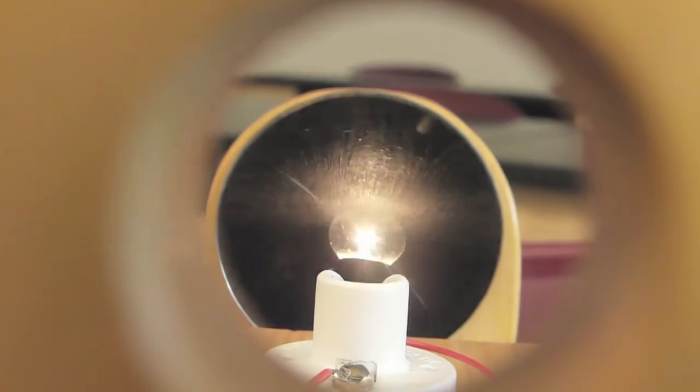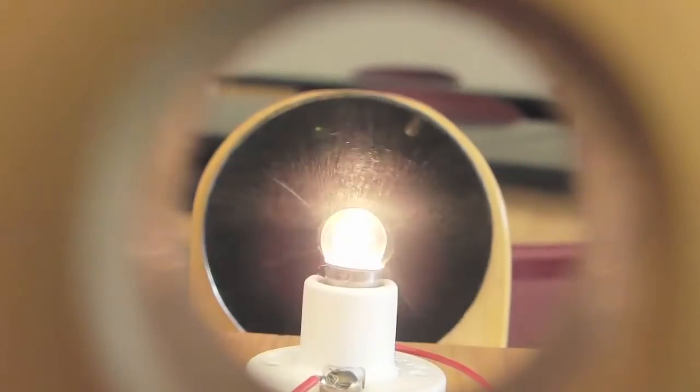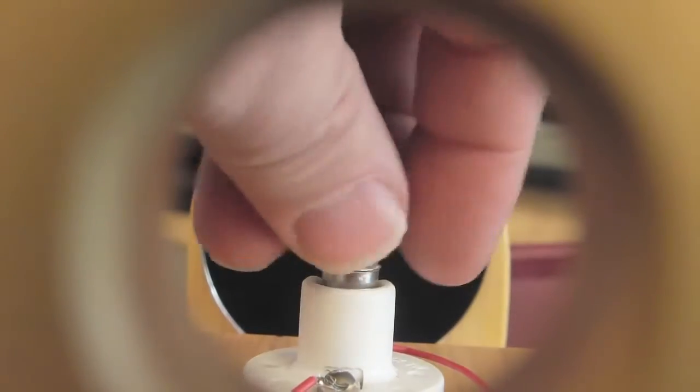So, as you can see, there's no bulb in the socket, but yet pushing on the button, a bulb appears. Let's put the bulb back in again. Push it down. There it is. Take it back out. Push down on the button, and it's still there. So, the whole question is, where is this coming from?